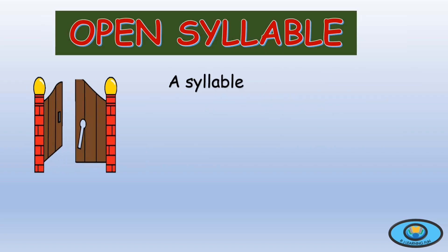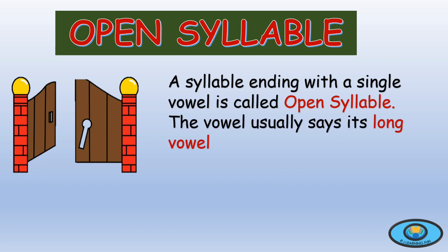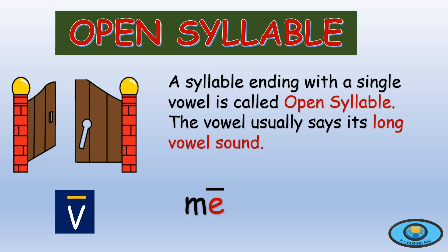The second type of syllable is the open syllable. A syllable ending with a single vowel is called an open syllable. The vowel says its long vowel sound, represented by only V — only a vowel, no consonant to stop the sound, and the dash represents the long vowel sound. So whenever a vowel is alone — after 'he' there is no consonant, so E makes its long vowel sound. 'Hi' — after I there is no consonant. 'So' — after O there is no consonant. Think of it like an open and closed gate: if a consonant is there, the gate is closed and the vowel says its short sound; if no consonant follows, the gate is open and the vowel makes its long vowel sound.